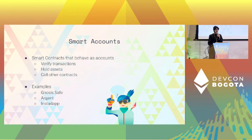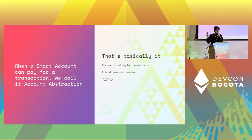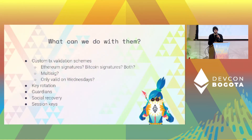Some known examples are the very popular Gnosis Safe multi-sig, Argent wallet which has social recovery. Account abstraction is basically a smart account that can also pay for its own transactions — that's pretty much it.